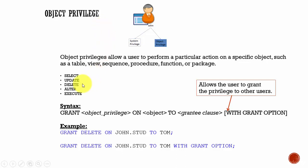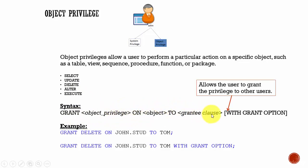The most common object privileges are SELECT, UPDATE, DELETE, ALTER, and EXECUTE. The syntax is the same: GRANT object_privilege_name ON object TO grantee, and again it supports the WITH GRANT OPTION clause.